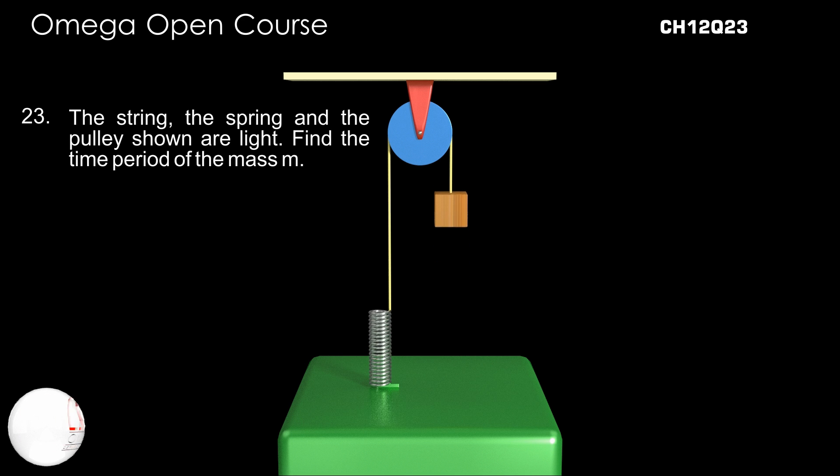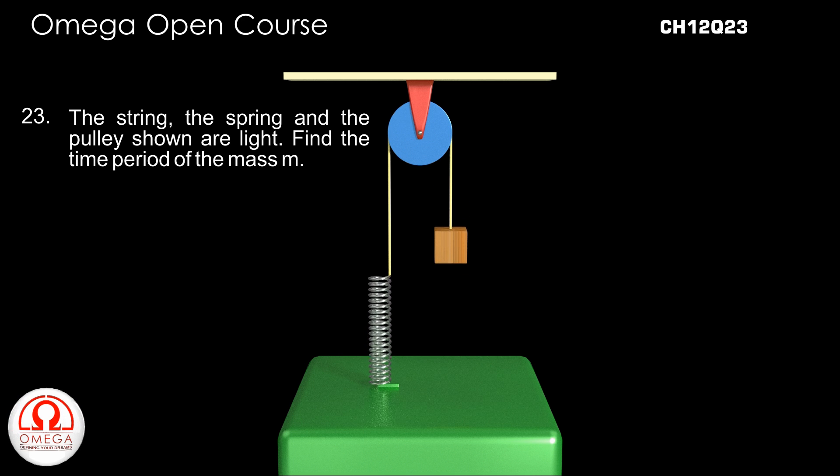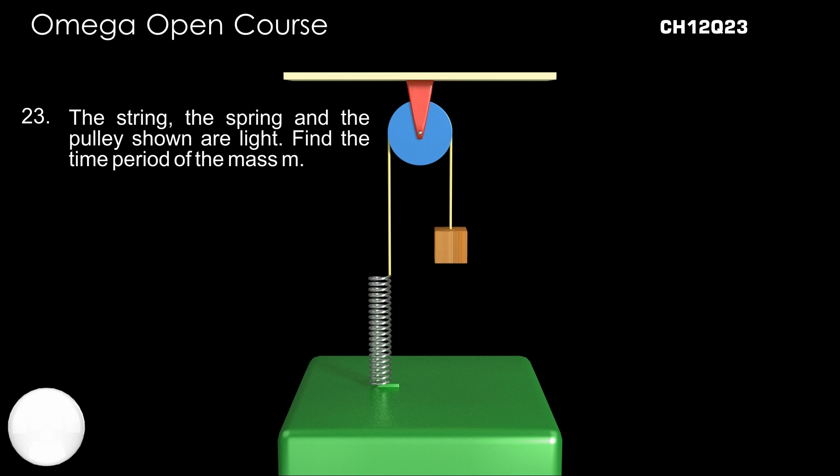The strings, the spring, and the pulley shown are light. Find the time period of mass M.